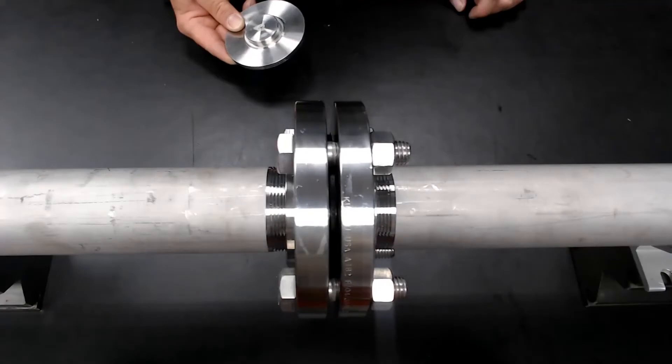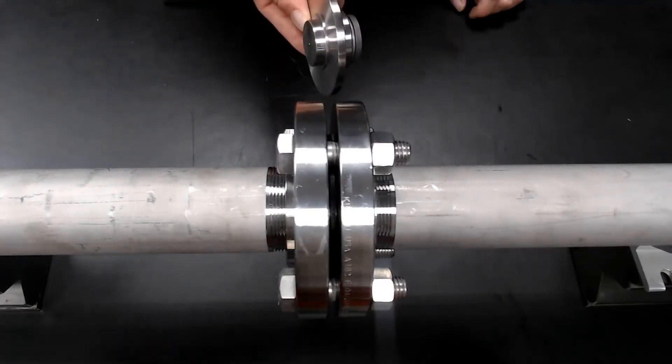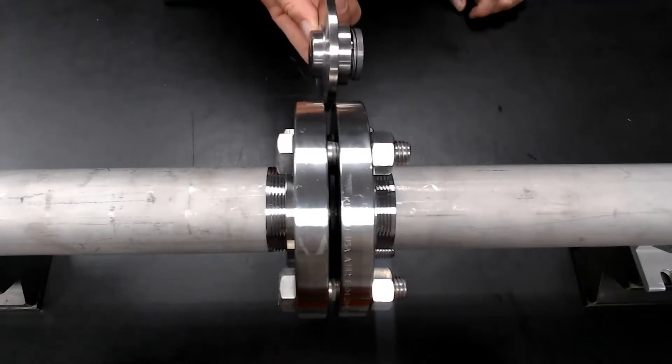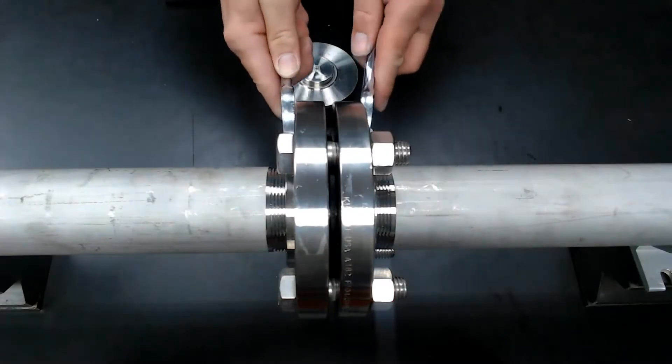So here's an existing flange connection and we're gonna install our flange insert valve within that, retrofit it right into the piping system. So simply loosen the fasteners.